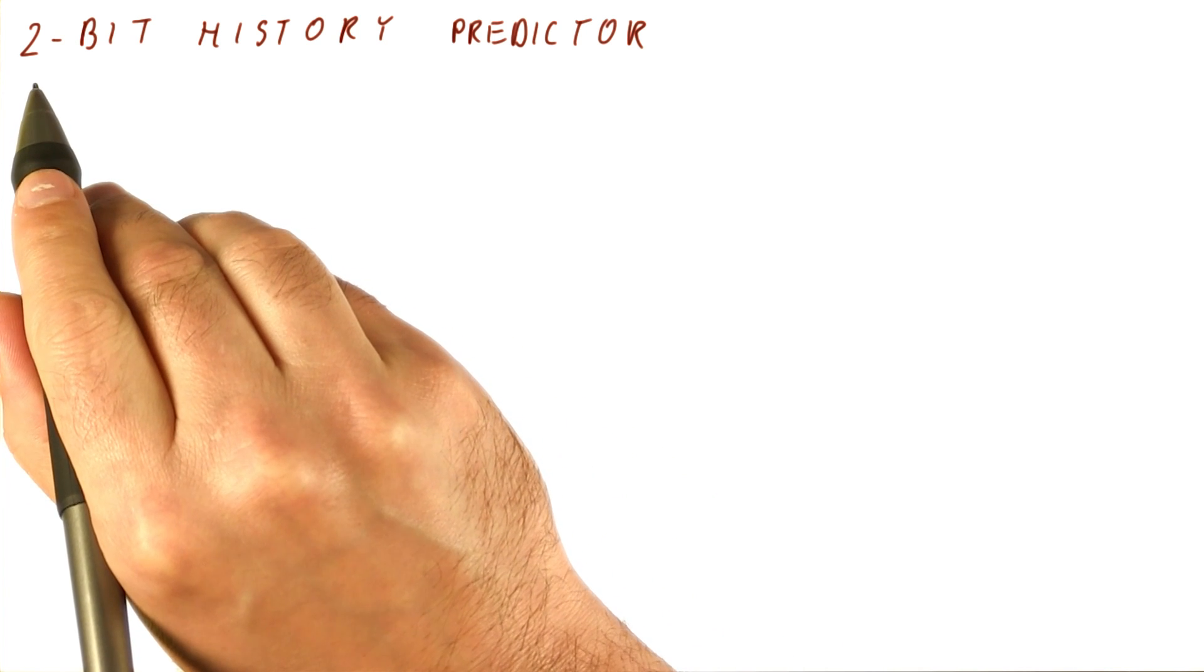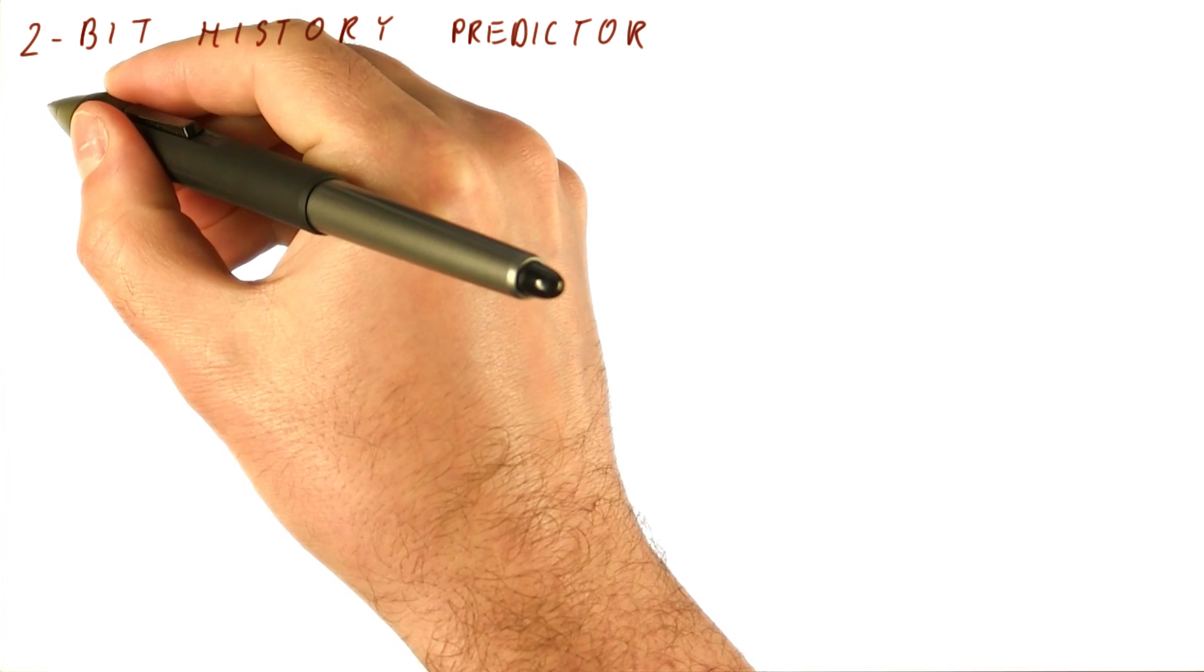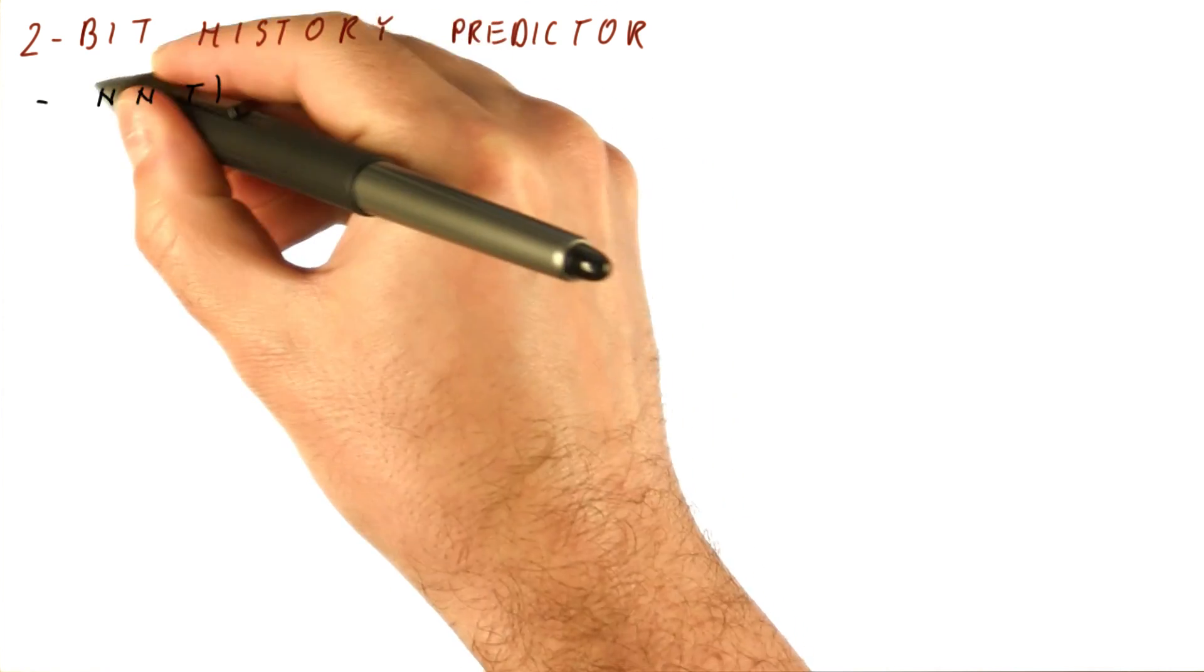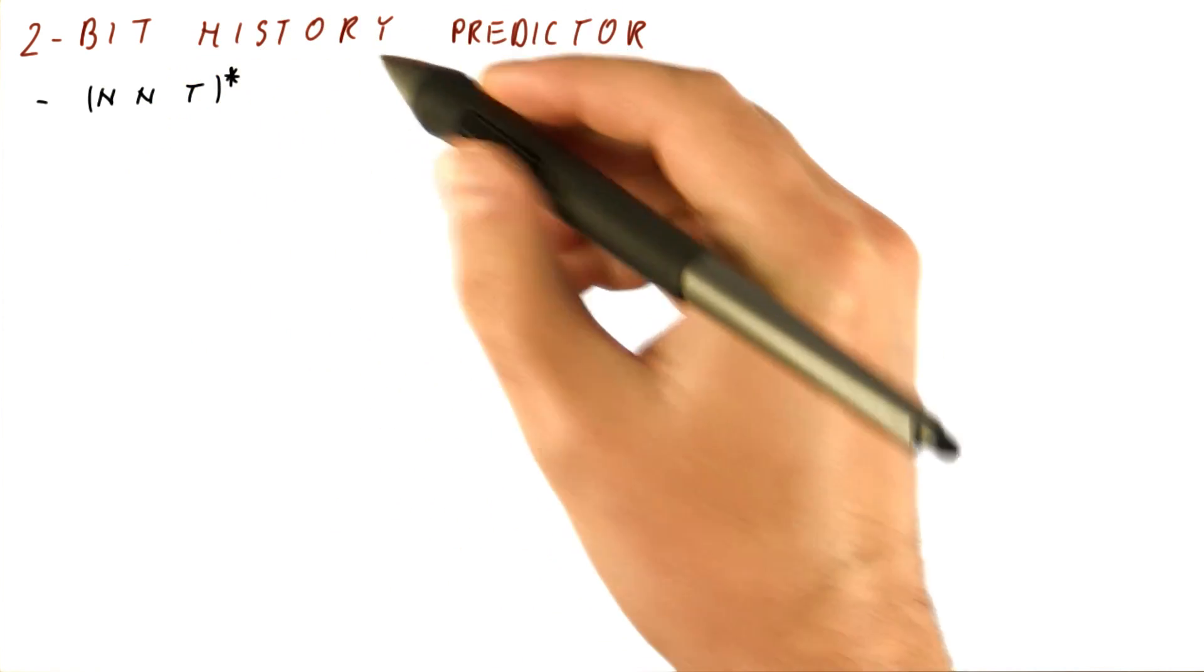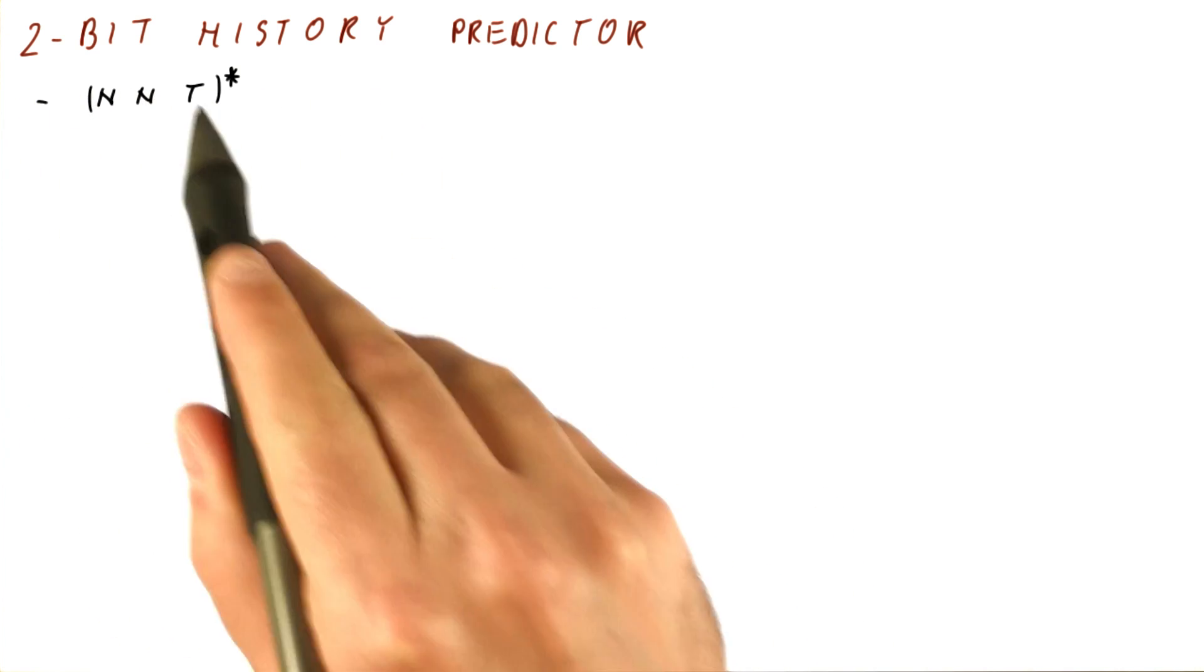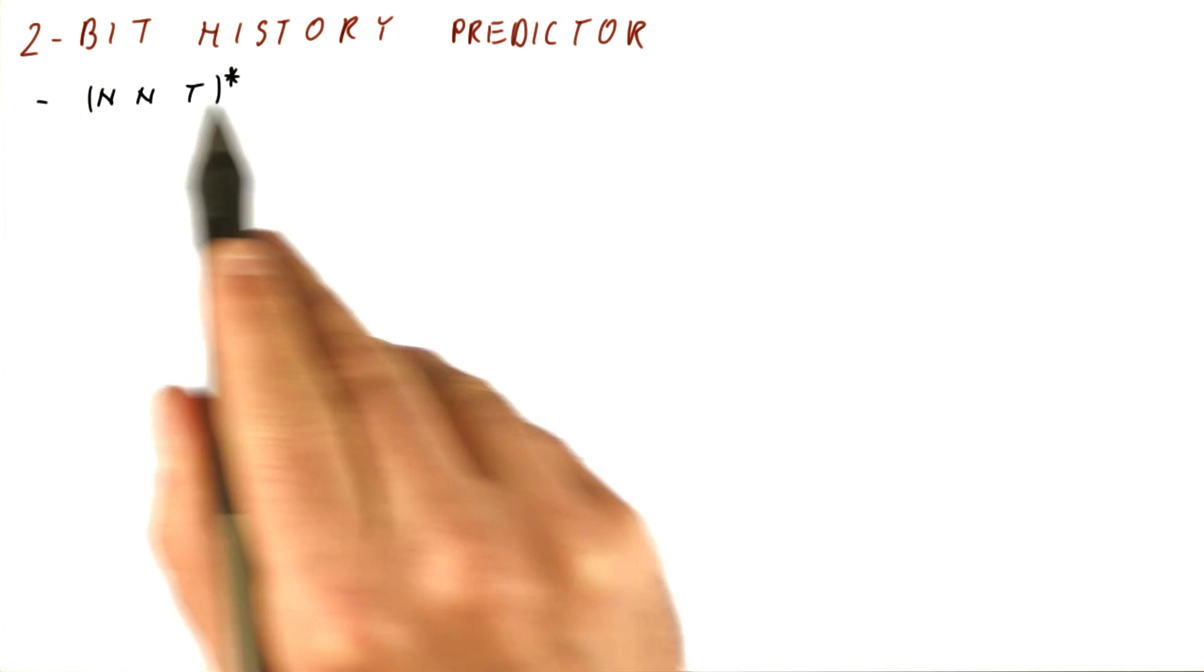So we have seen in the previous quiz that the one bit predictor cannot really predict well the pattern N and T that repeats. We will see that a two bit history will be successfully predicting this pattern. How does a two bit history predictor work?